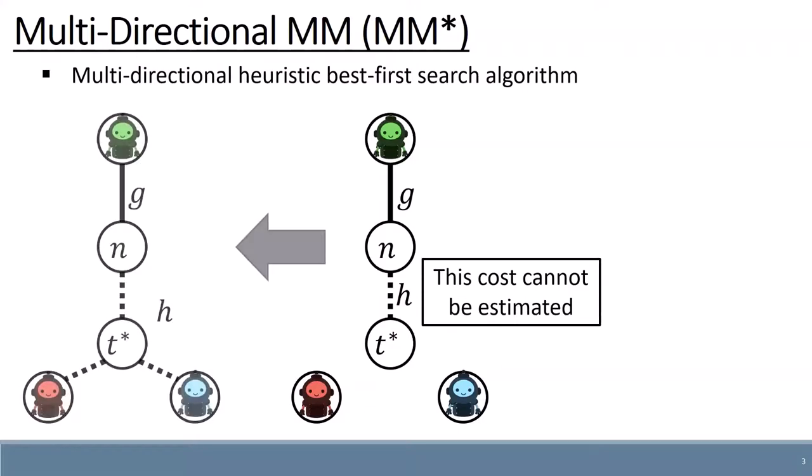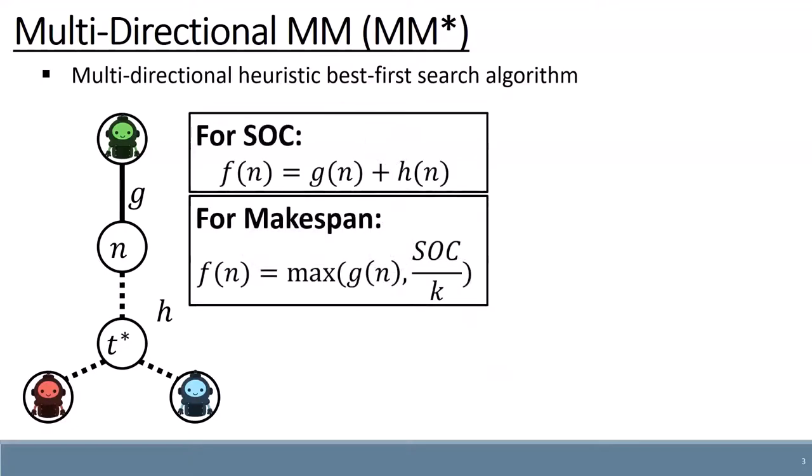Thus, the heuristic function estimates the cost to the optimal meeting location, plus the cost of the other agents to get to that location. We use this heuristic for minimizing either sum of cost or makespan.